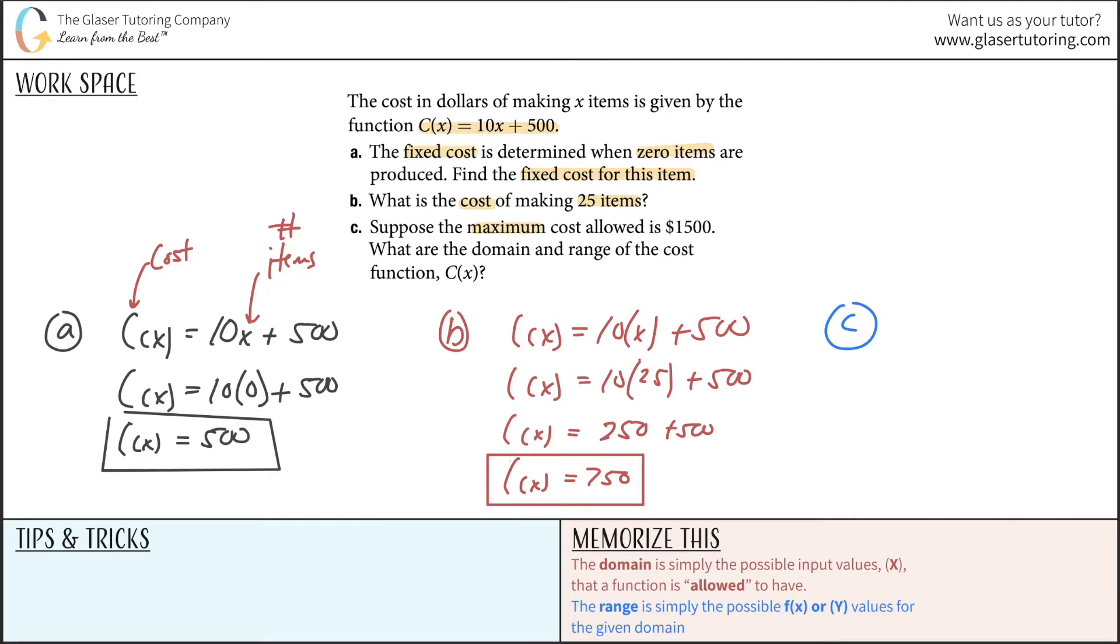Last, suppose the maximum cost allowed is 1500 dollars. What is the domain and range of the cost function? Again, we have our cost function. The cost of producing this number of items is equal to 10x plus 500. Now let's plug in the maximum cost. If I plug in 1500 here, what would this tell us? If I solve this for x by subtracting 500 from this side, this would be 1000 equals 10x, and divide both sides by 10, so x equals 100. Basically what it tells us is that if our maximum cost is 1500 dollars, that means our maximum number of items produced or maximum number of pizzas is 100.